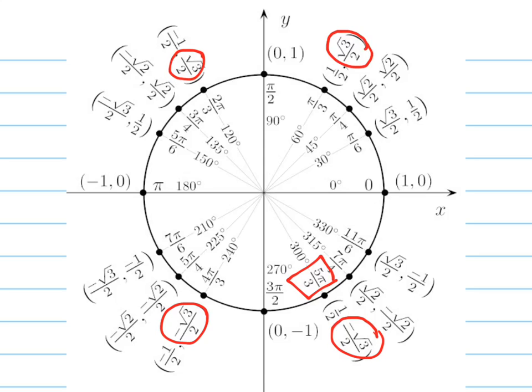So those are all my answers right there. If they want them in radians, then you write those numbers. If they want them in degrees, you write the degree numbers. But those are your answers.